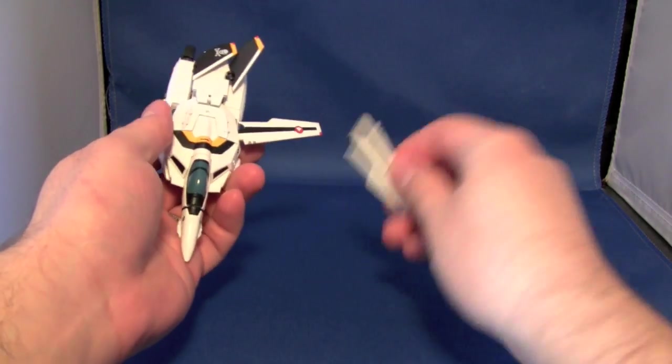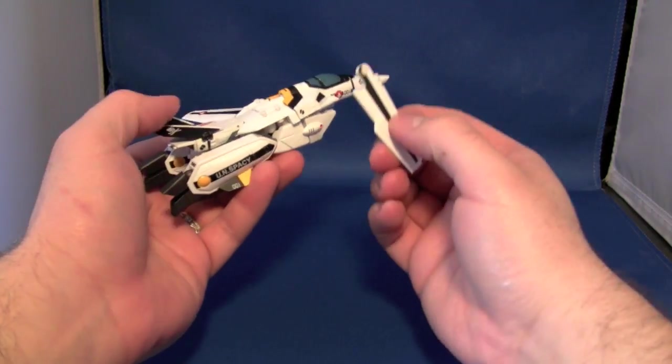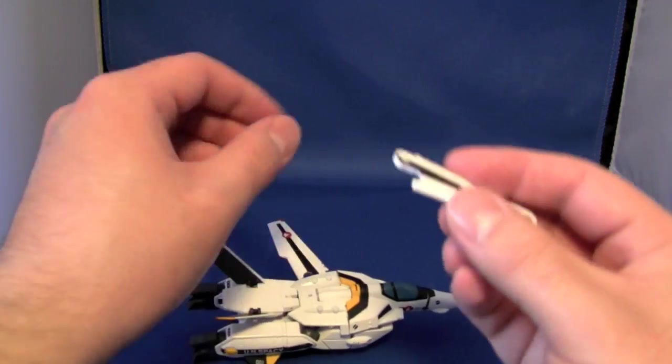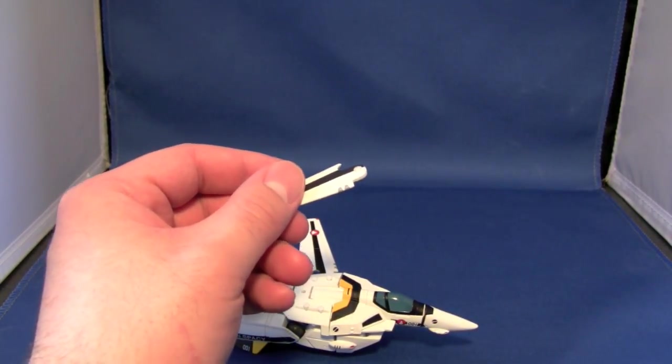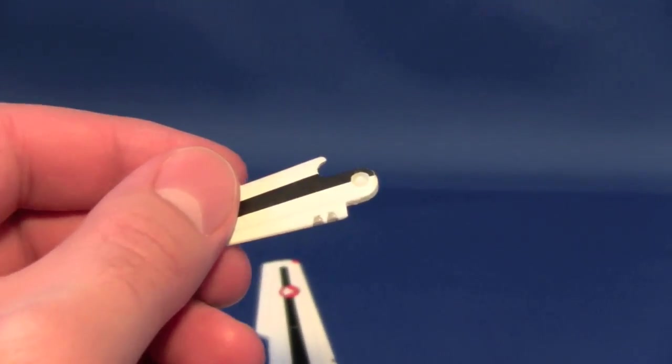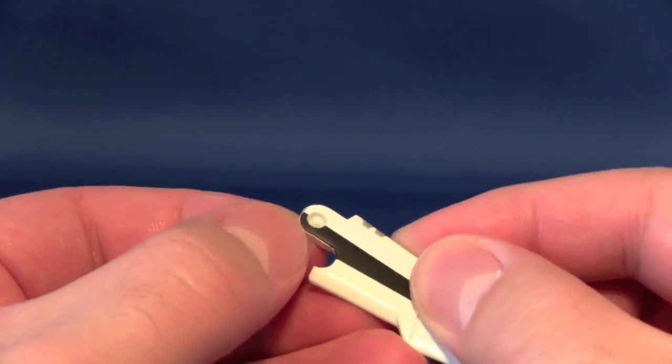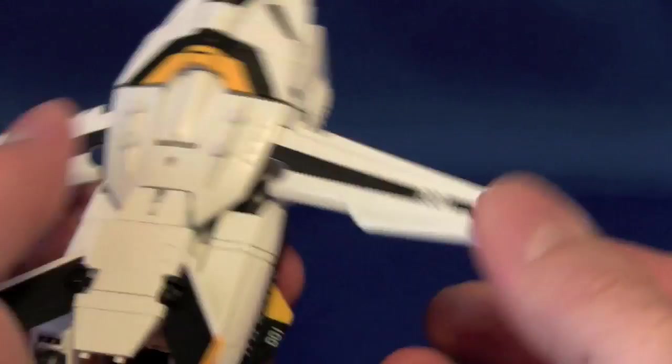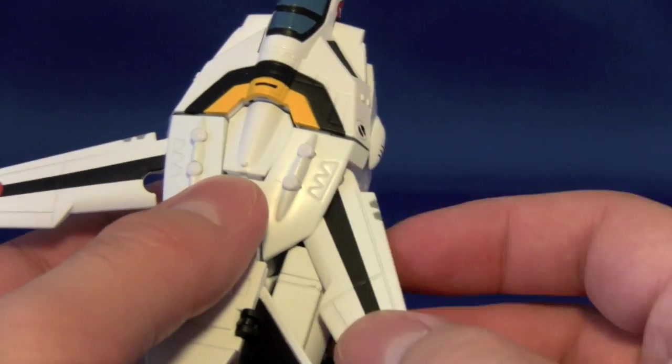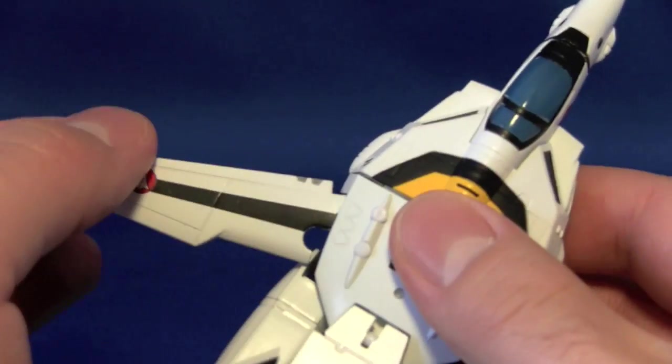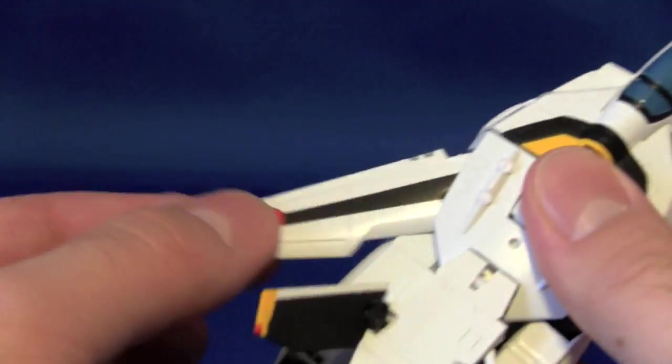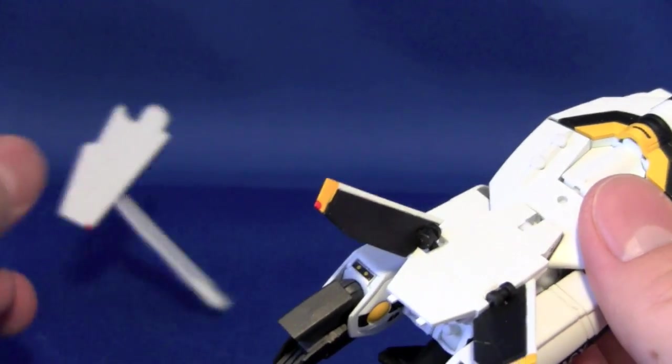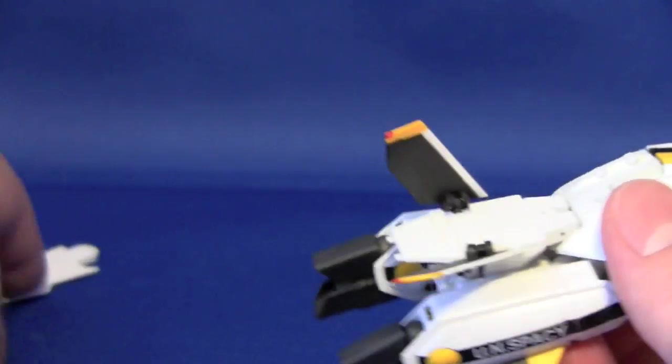First thing you'll notice is the wing fell off. That is a major, major, major problem with this figure. These things fall off at the drop of a hat. It's just a pretty flimsy little peg that fits in there. Even just moving it will cause it to fall off. Just moving the wings causes them to fall off. Major problem there. I'm going to put the wings off to the side for right now.